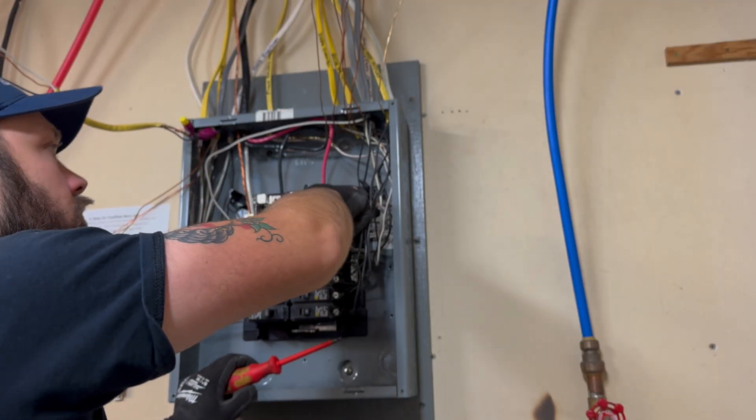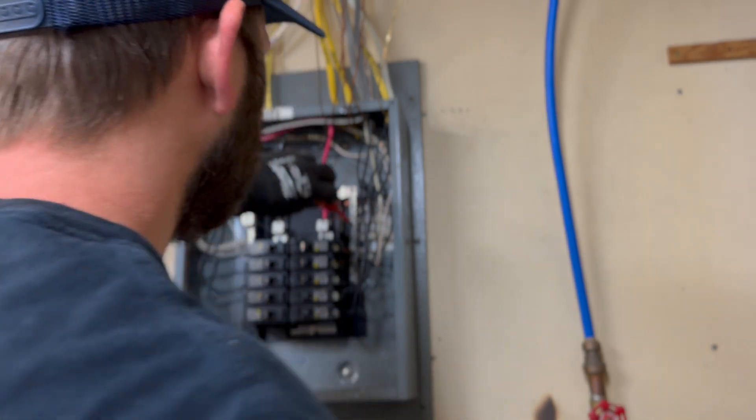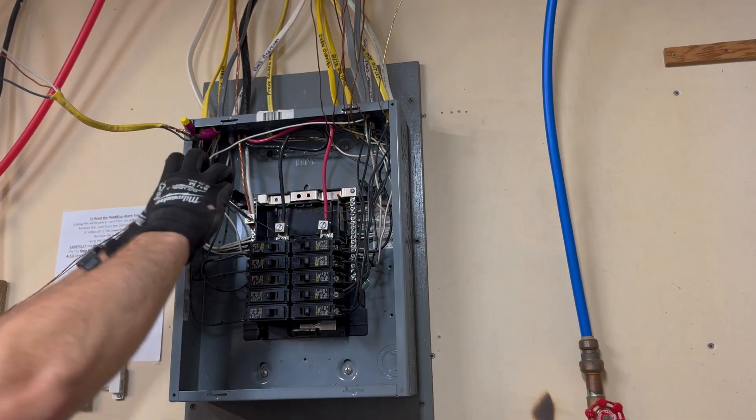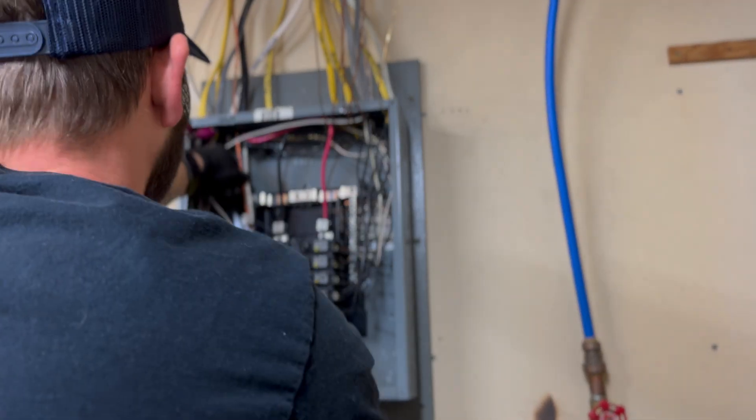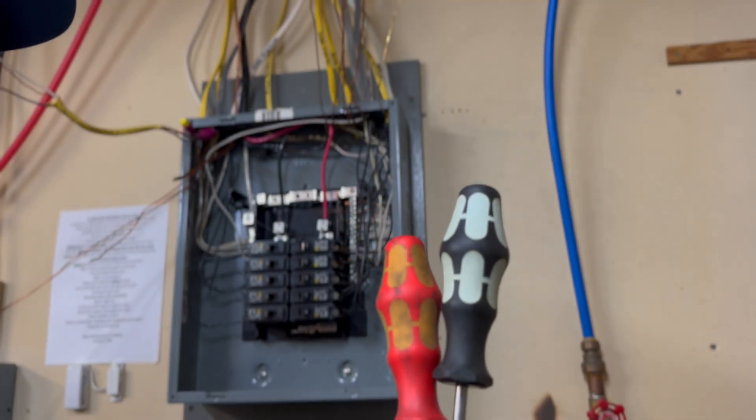And obviously the panel was de-energized for this. It was just fed from the main panel to a pole 60. But as I got all these neutrals and this bonding jumper out...